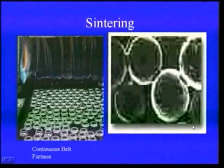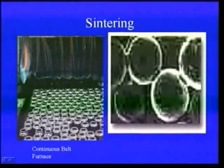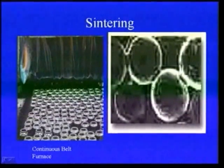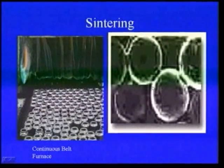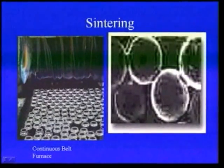Sintering is carried out in a continuous belt furnace. This is the continuous belt furnace in which a number of components to be sintered are kept. This diagram shows how the grain boundaries are developed. The development of grain boundaries takes place by diffusion of metal atoms along the adjacent edges.